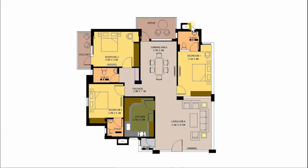This is the layout of a 3 BHK. The entrance takes us to the living area and the dining area, which are the common spaces. There is also a common passage leading to the bedrooms. There are 3 bedrooms — 2 are designed with attached toilets, and one has a balcony. All 3 bedrooms are well ventilated with windows for natural light and ventilation, and all are furnished for storage purposes.